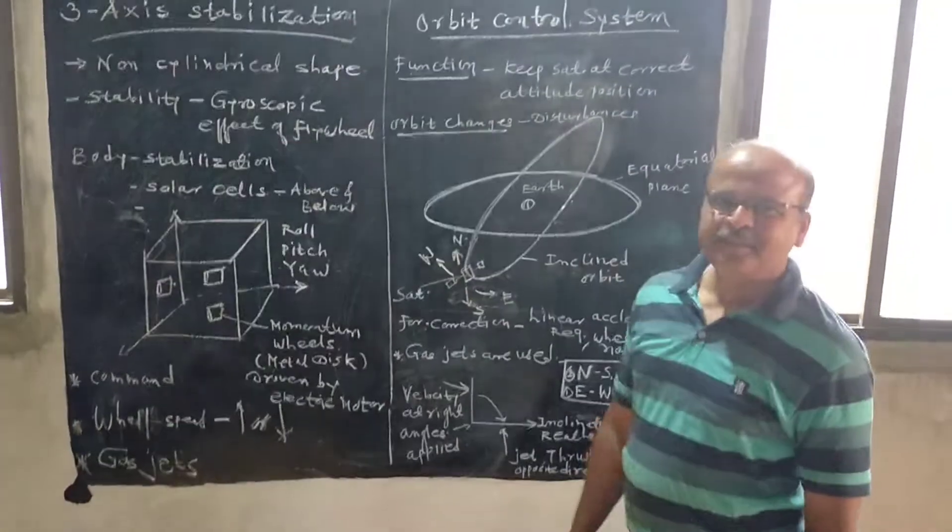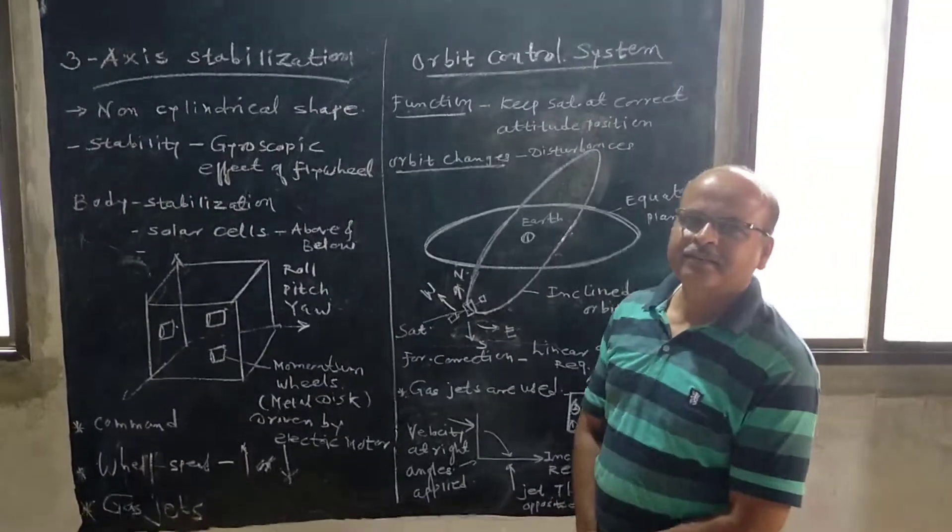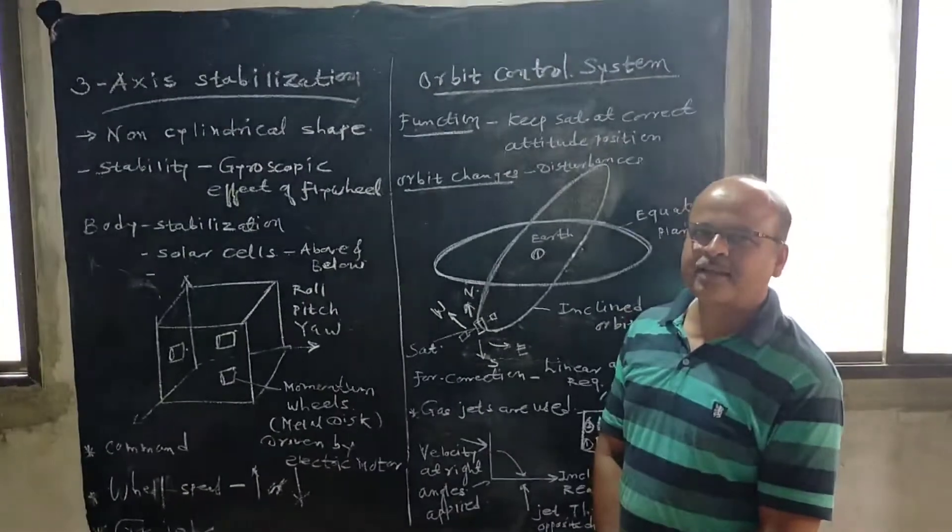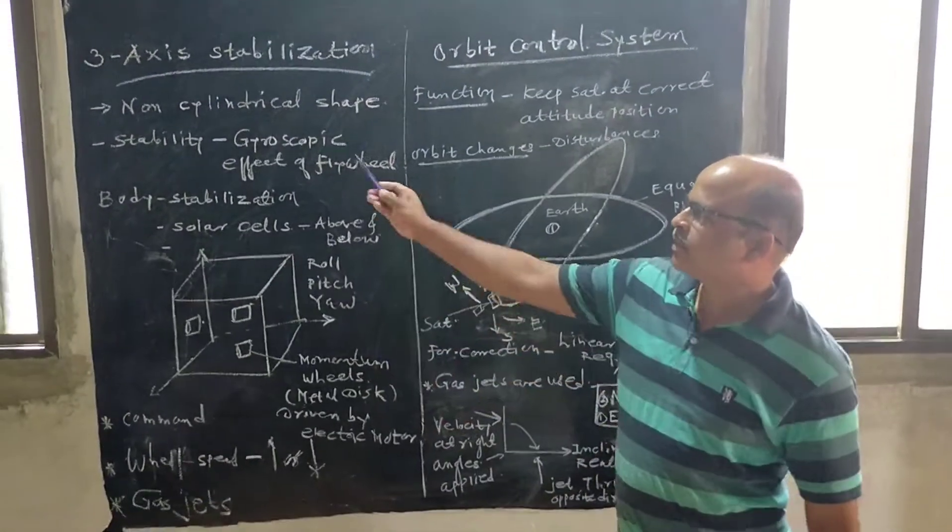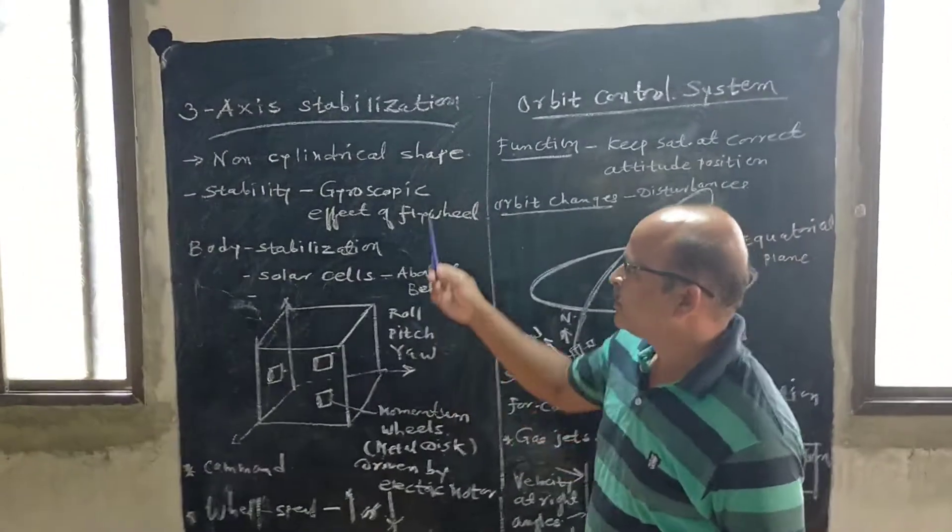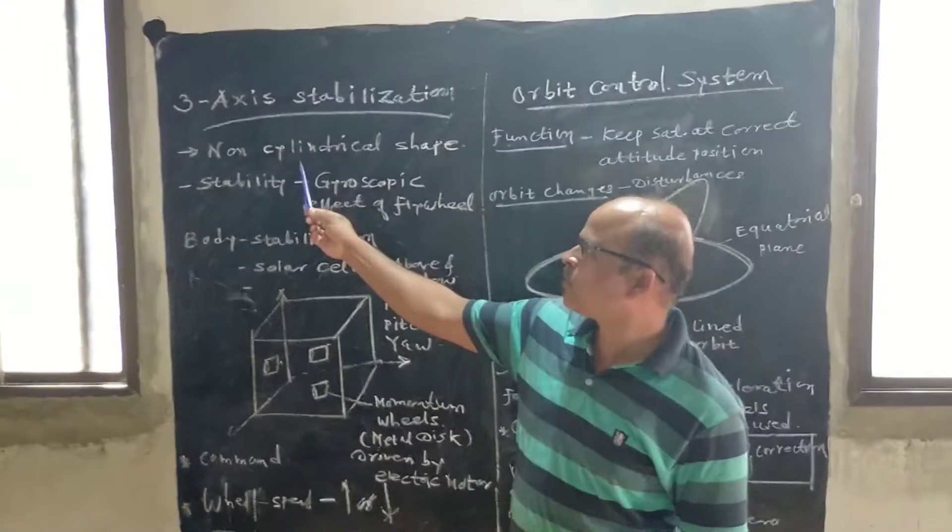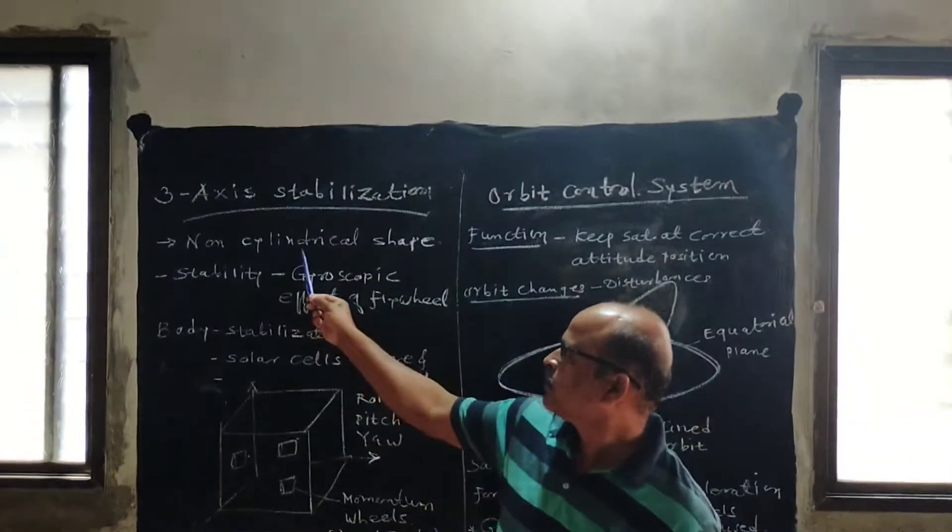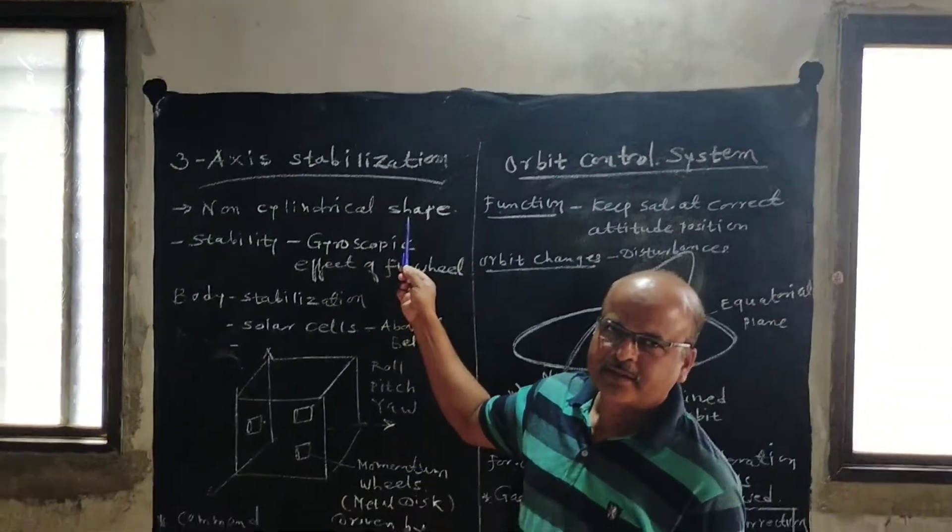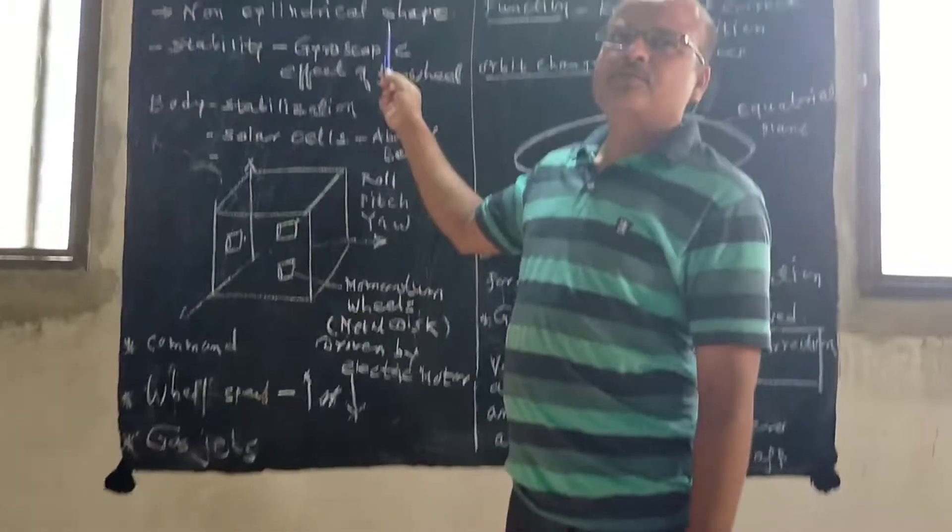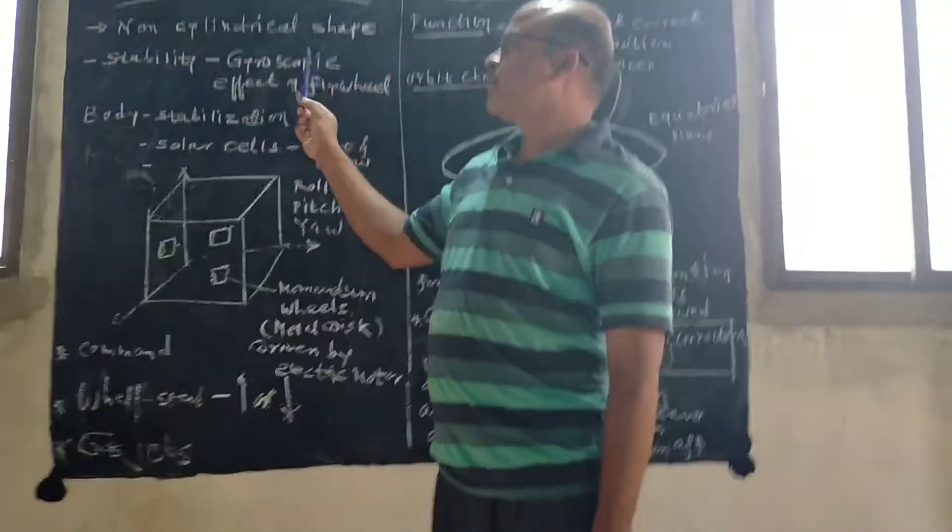Hello students. In the previous lecture, we have studied the attitude control system. In that, we have studied spin stabilization and next second method is three-axis stabilization. This three-axis stabilization method is generally provided or used for non-cylindrical shaped satellites. Spin stabilization method generally uses or used for cylindrical shaped satellites.